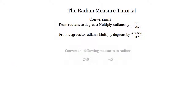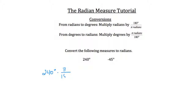Let's convert the following measures to radians, starting with 240 degrees. We have 240 degrees and we want to convert to radians, so we multiply by π over 180 degrees. We get 240π over 180. We can cancel out the zeros, and 24 over 18 reduces to 4 over 3, with π still in the numerator. So 240 degrees converts to 4π over 3 radians.